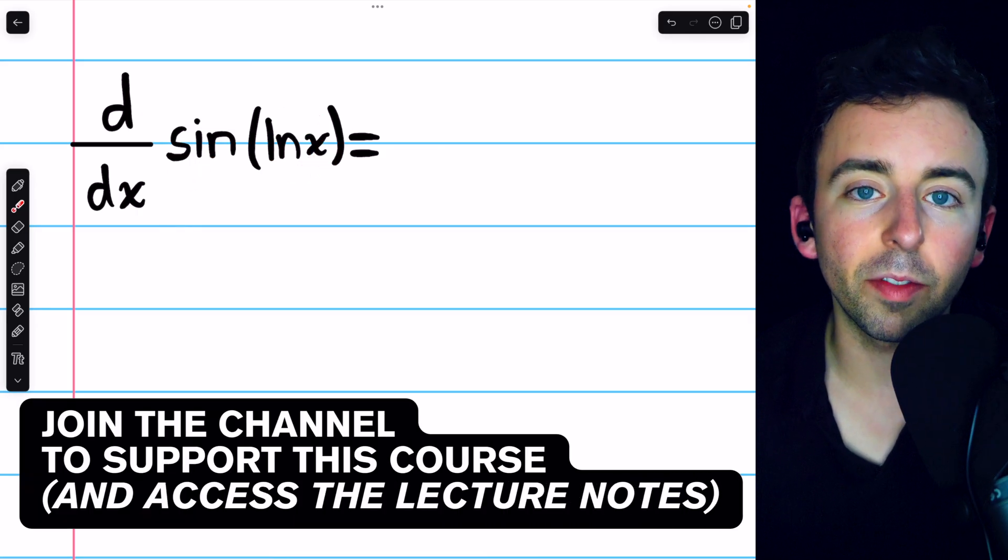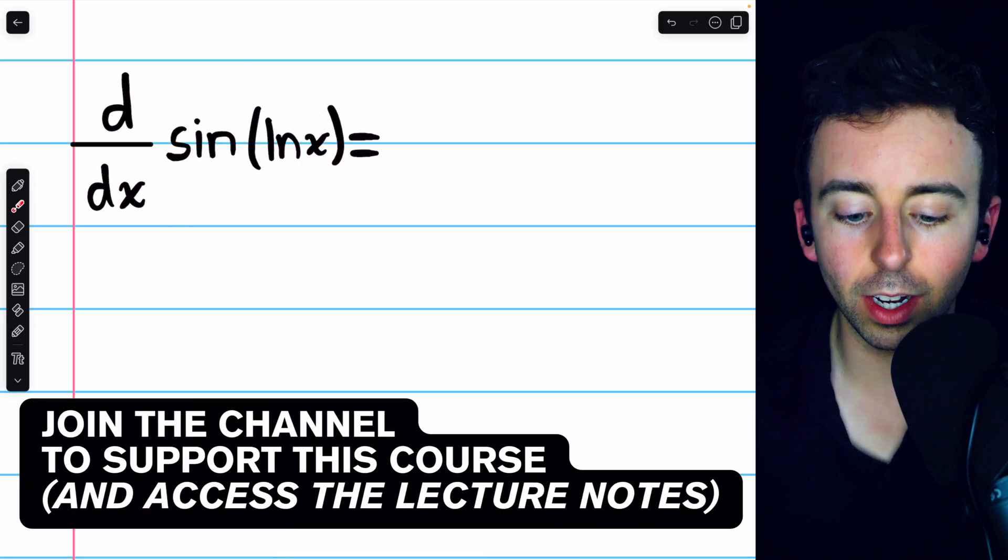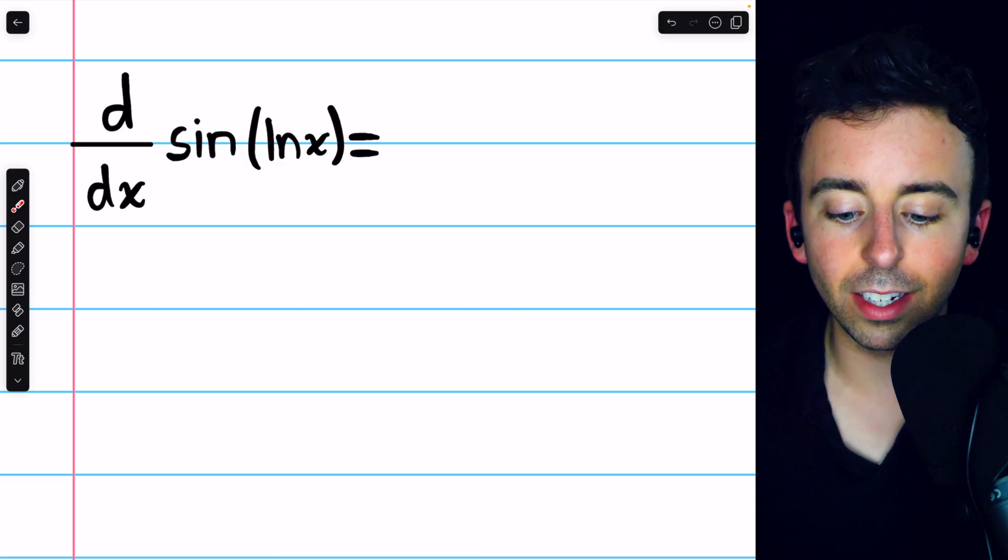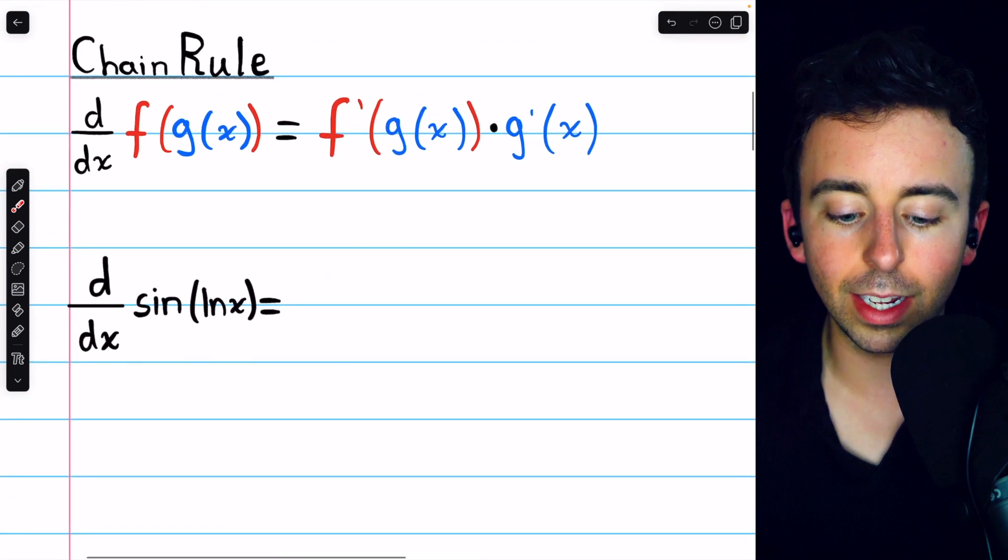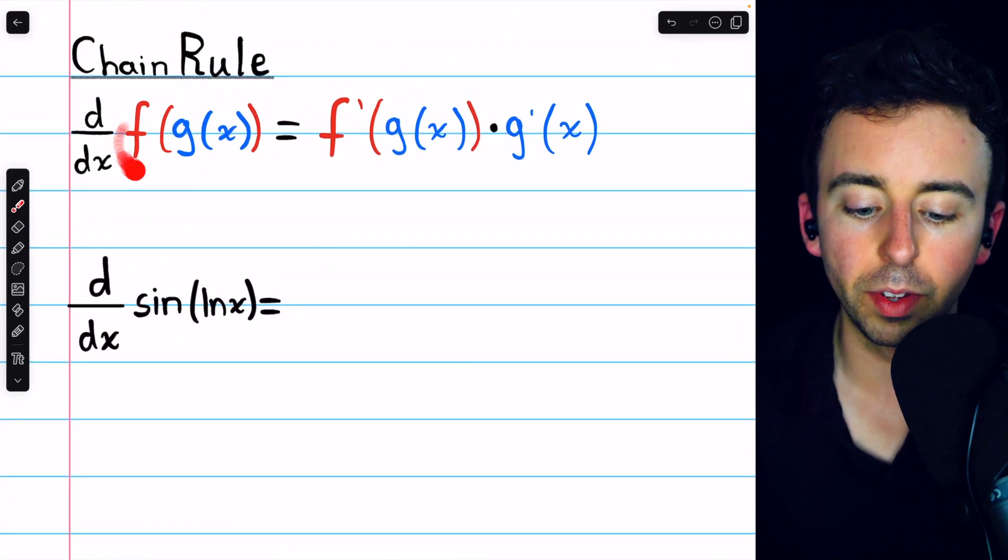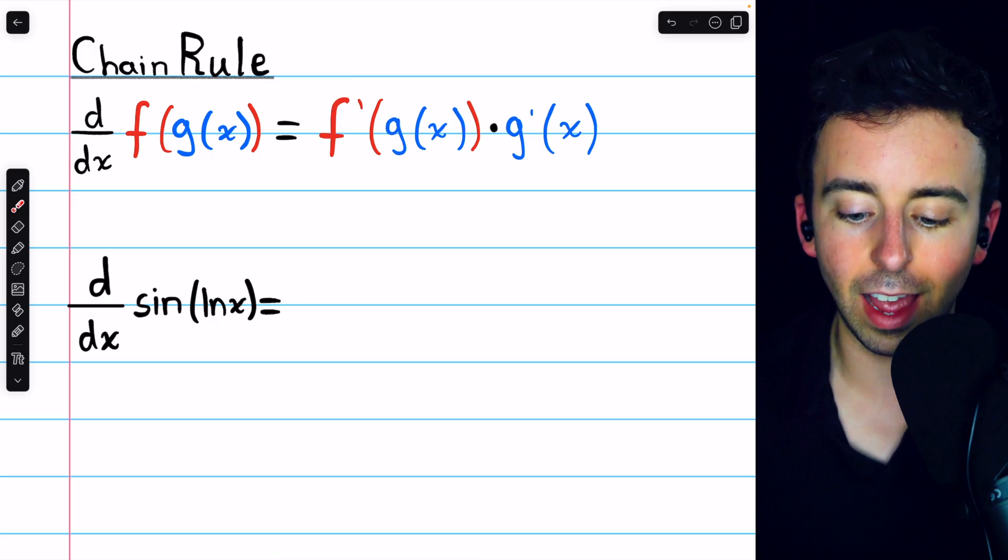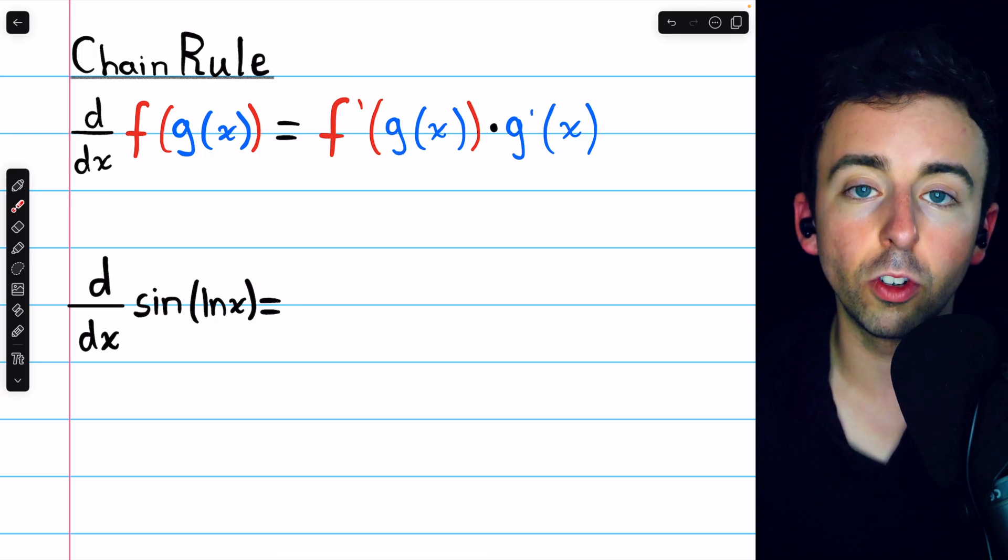Sine of the natural log of x is a composite function, so to take its derivative we need to use the chain rule, which I've written here for your reference. The derivative of f of g is f prime of g times g prime.